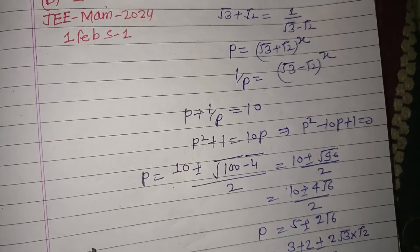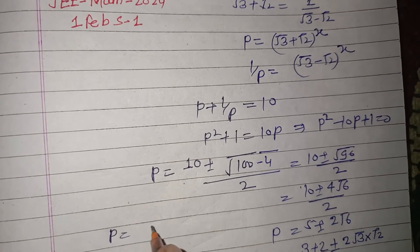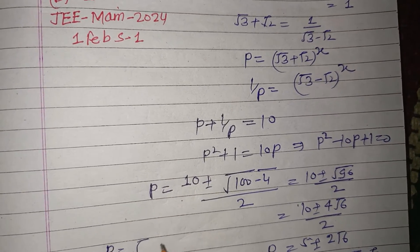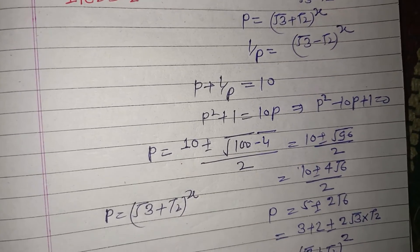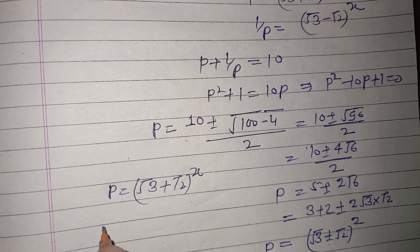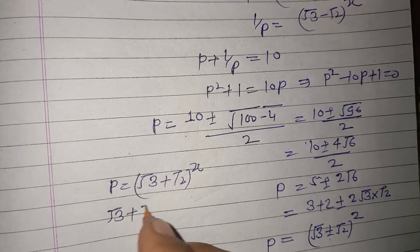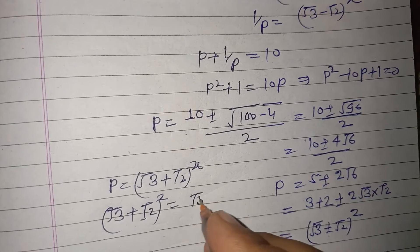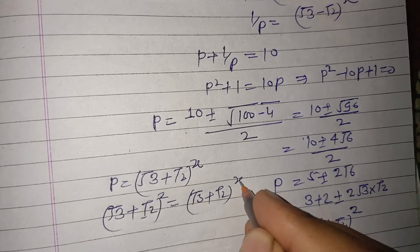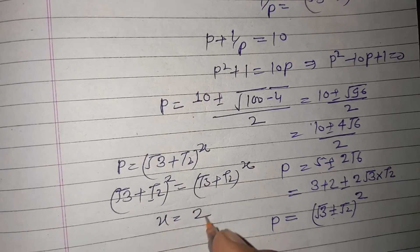Now putting this value: (√3 + √2)² = (√3 + √2)^x, from here x = 2.